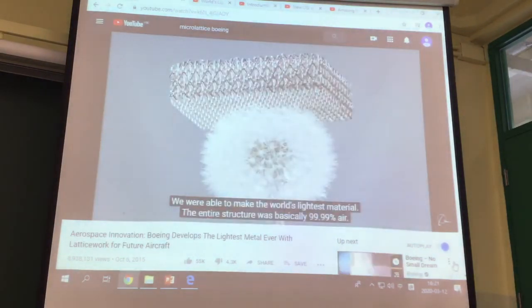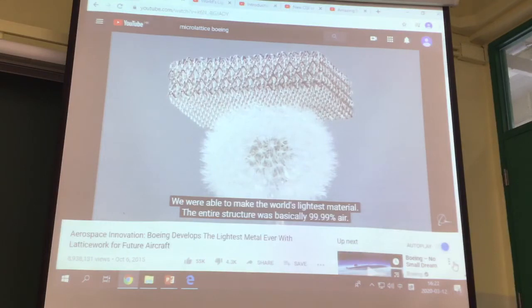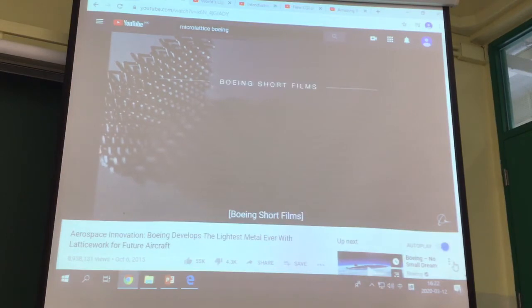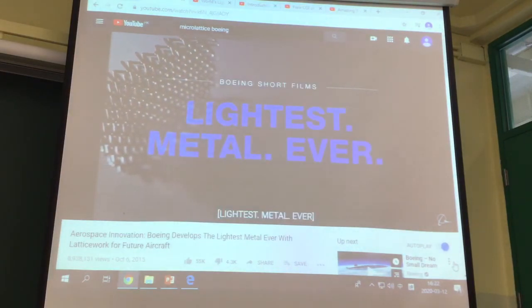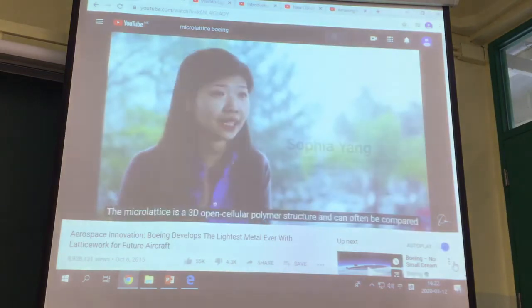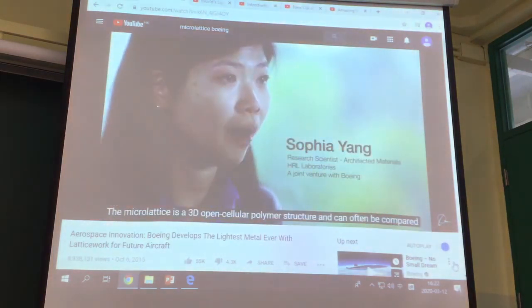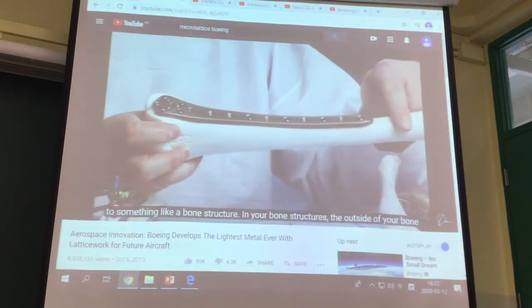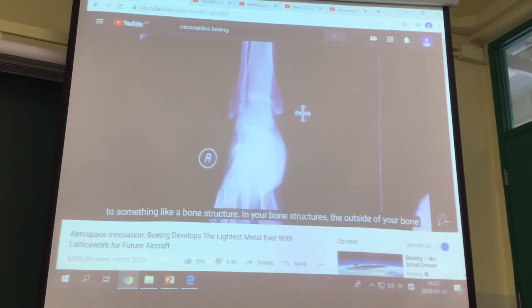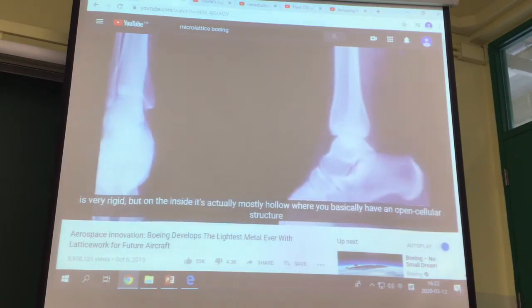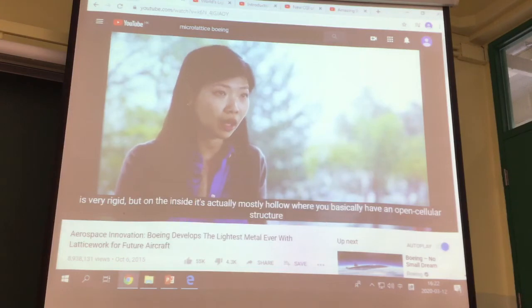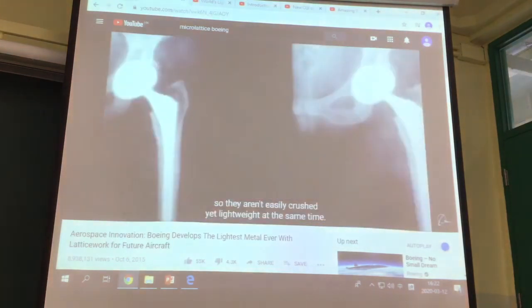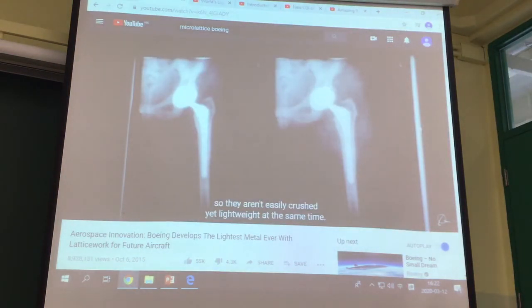We were able to make the world's lightest material. The entire structure was basically 99.99% air. The micro-lattice is a 3D open cellular polymer structure and can often be compared to something like a bone structure. In your bone structure, the outside of your bone is very rigid, but on the inside it's actually mostly hollow, where you basically have an open cellular structure. So they aren't easily crushed yet lightweight at the same time.